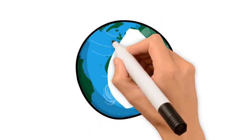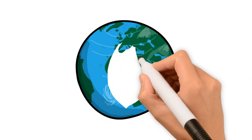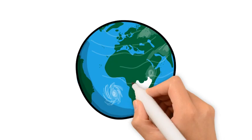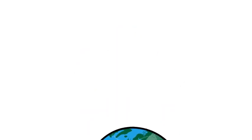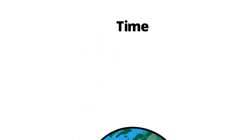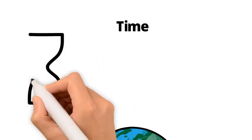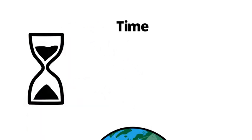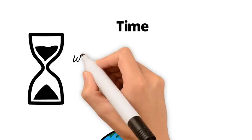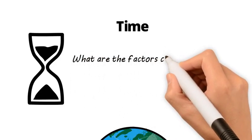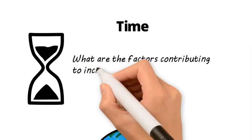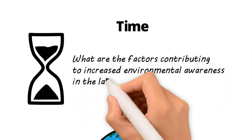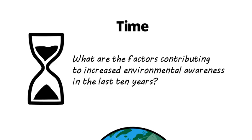Let's say that you want to write about the environment or green movements. Some ways to narrow down this topic include time. Has your topic changed over time? Can you look at a particular era or time period? For example, what are the factors contributing to increased environmental awareness in the last 10 years?